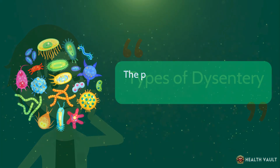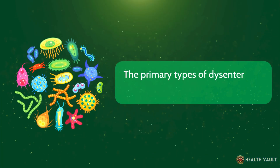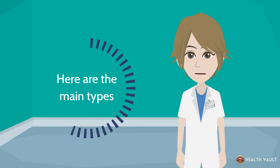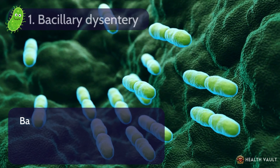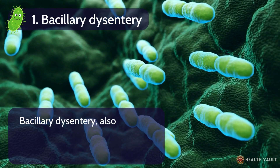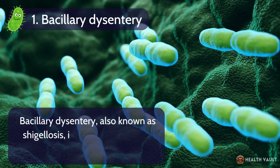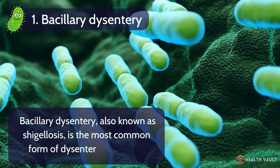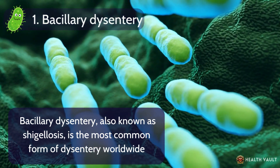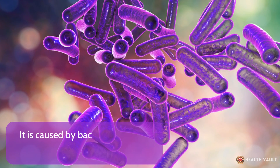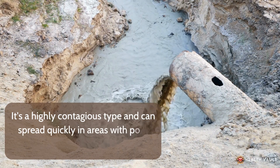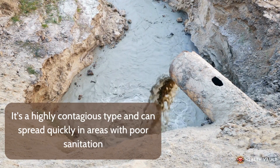The primary types of dysentery are classified based on their cause. Number 1: Bacillary dysentery, also known as shigellosis, is the most common form of dysentery worldwide. It is caused by bacteria, primarily Shigella species. It's a highly contagious type and can spread quickly in areas with poor sanitation.